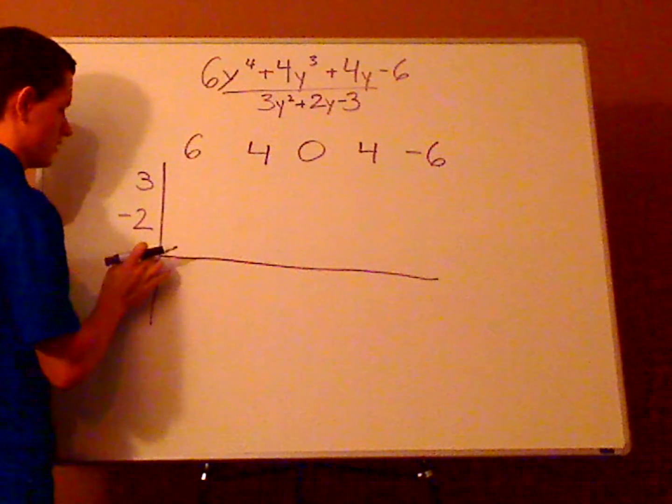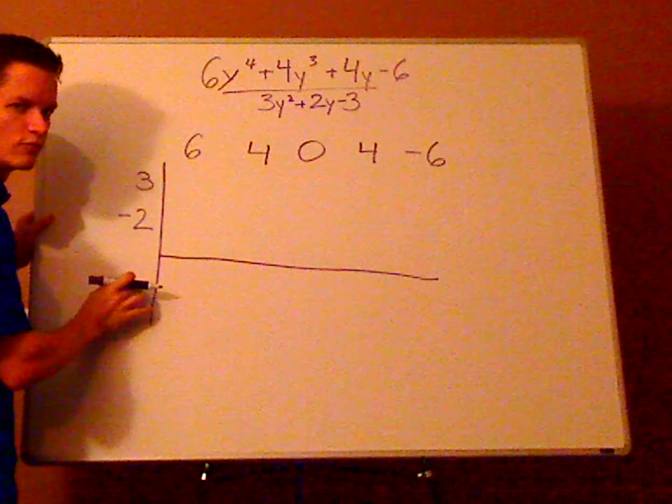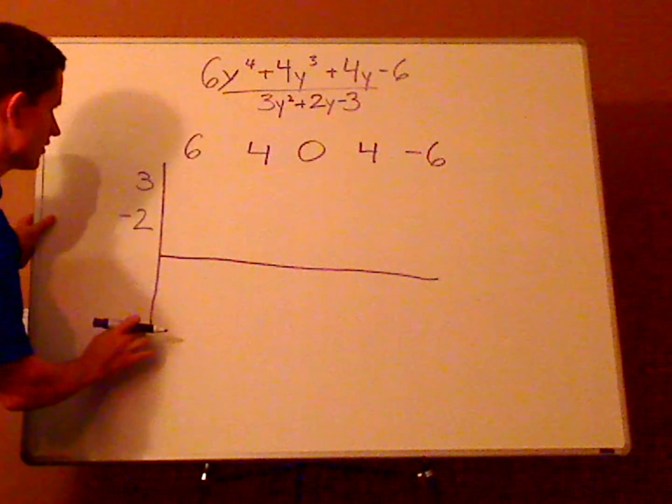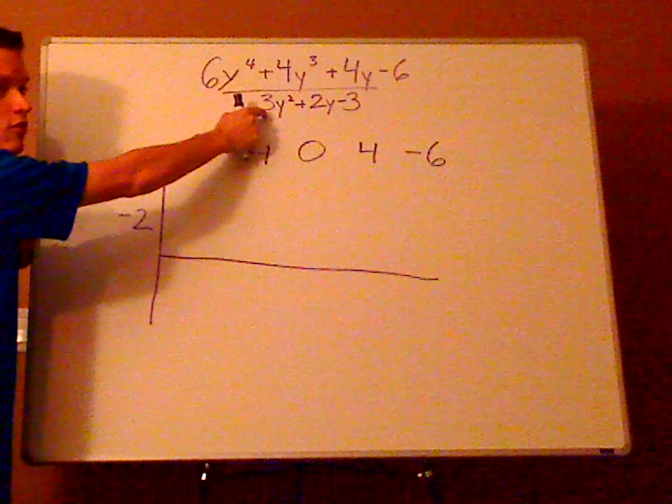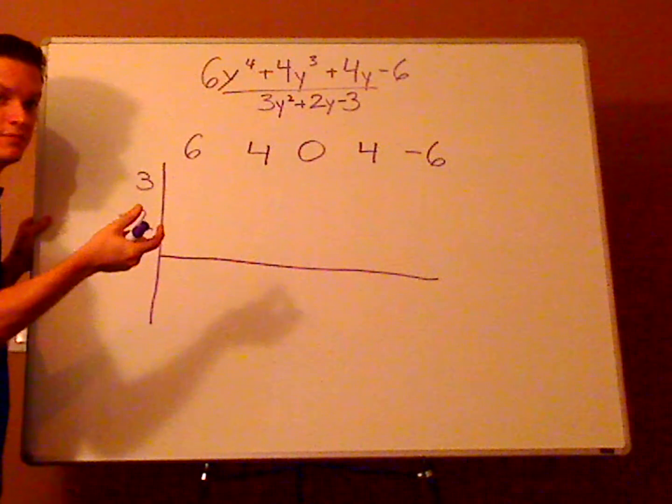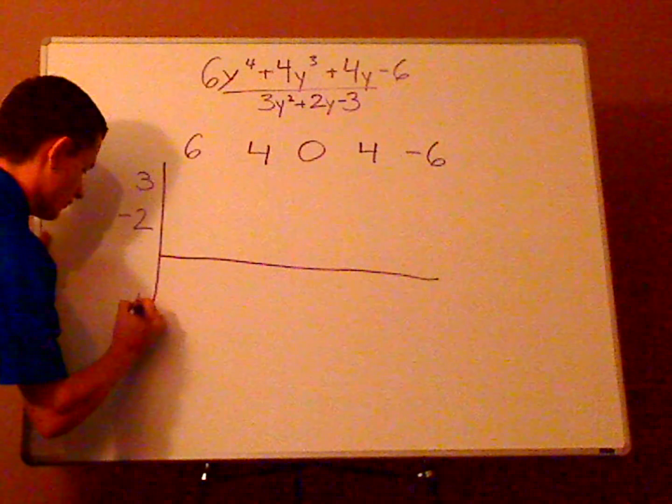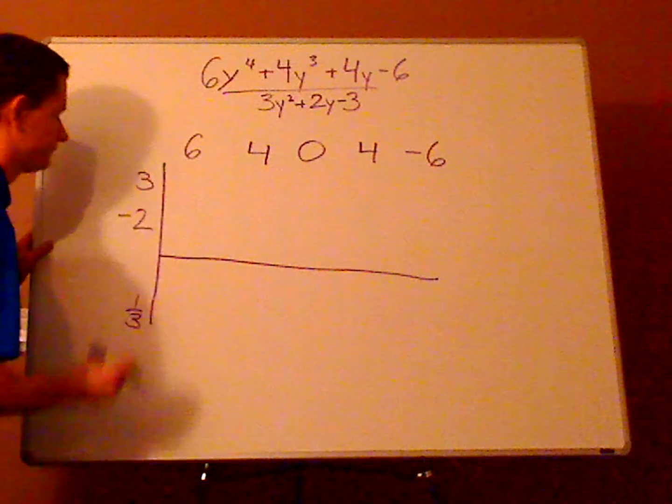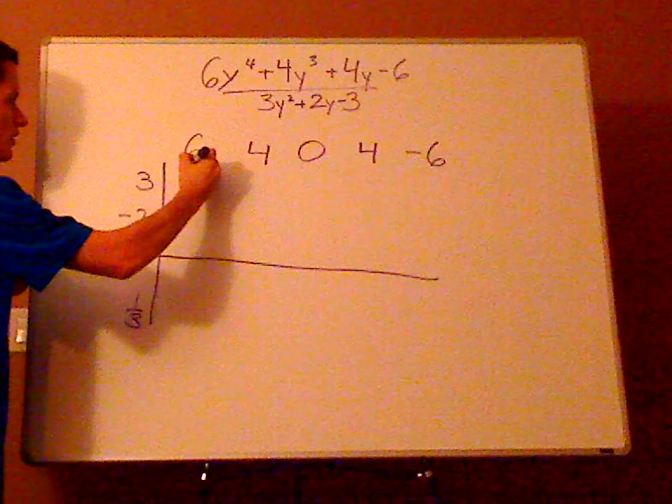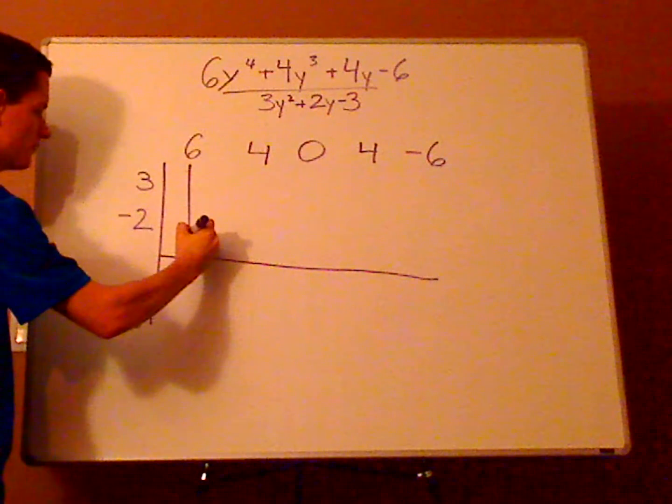Negative 2, put a gap, don't worry anything, and then here take this coefficient and make it the reciprocal, so that's 1 over 3. Now we're going to first bring down the 6 like that.